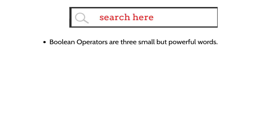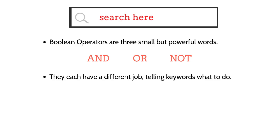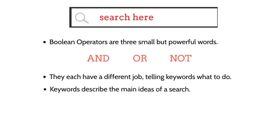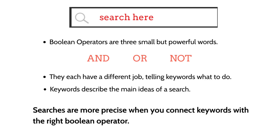Boolean operators are three small but powerful words: and, or, not. They each have a different job, telling keywords what to do. Keywords describe the main ideas of a search. Your searches are more precise when you connect keywords with the right Boolean operator.